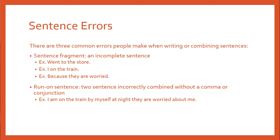The next common kind of error is a run-on sentence, where two sentences are combined incorrectly without using a comma or a conjunction. One example: 'I am on the train by myself at night, they are worried about me.' There are two complete sentences here — 'I am on the train by myself at night' and 'they are worried about me' — but they are not combined using any kind of punctuation or conjunctions, which is the appropriate way to put two sentences together.